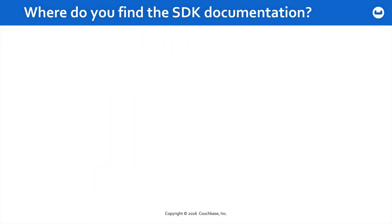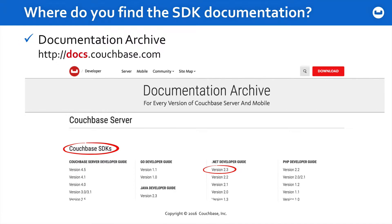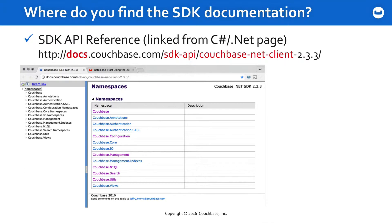Where will you find the documentation? It's all online. If you go to docs.couchbase.com, you'll get to our documentation archive. From there you'll find the .NET developer guide for version 2.3, and from there you can get the SDK reference itself for Couchbase .NET client 2.3.3. I'll make sure that you see these pages in a moment when we tour the lab a bit.